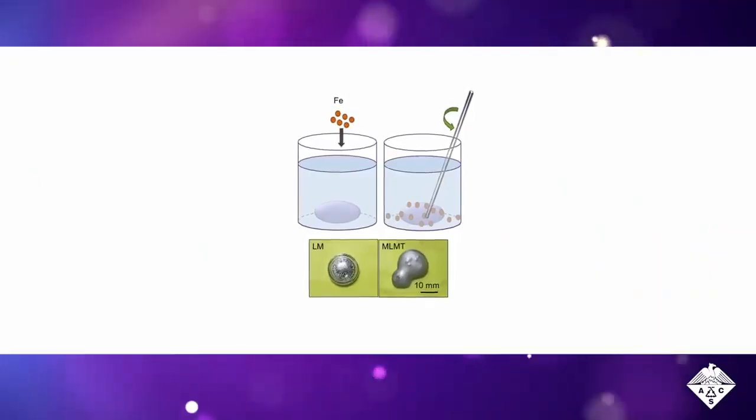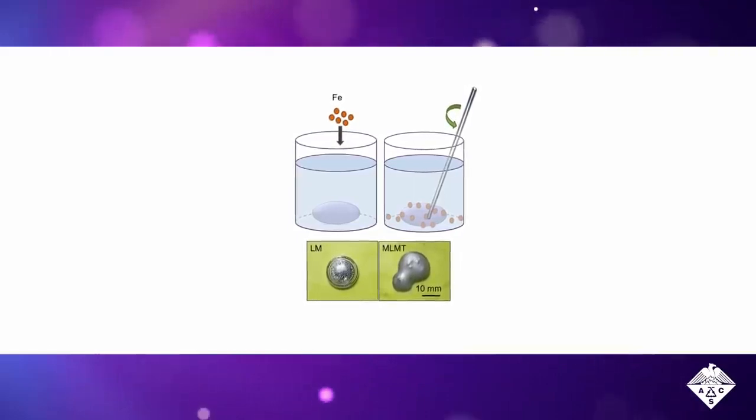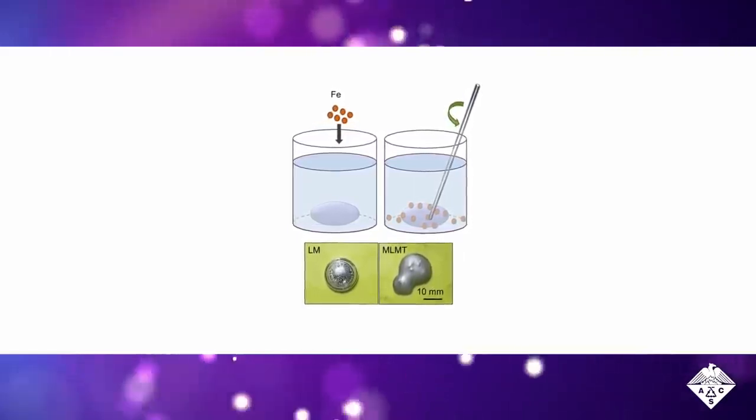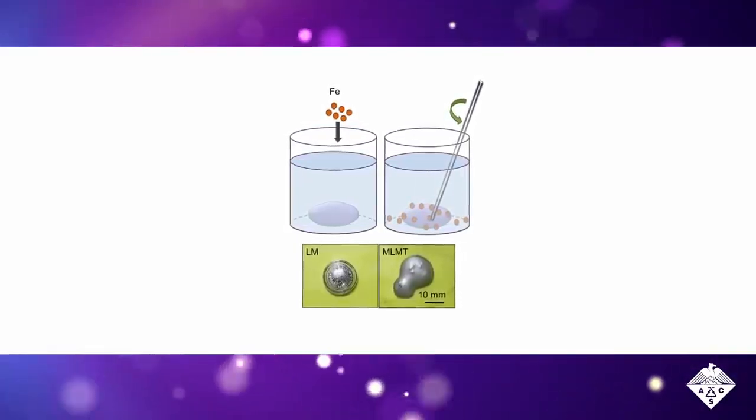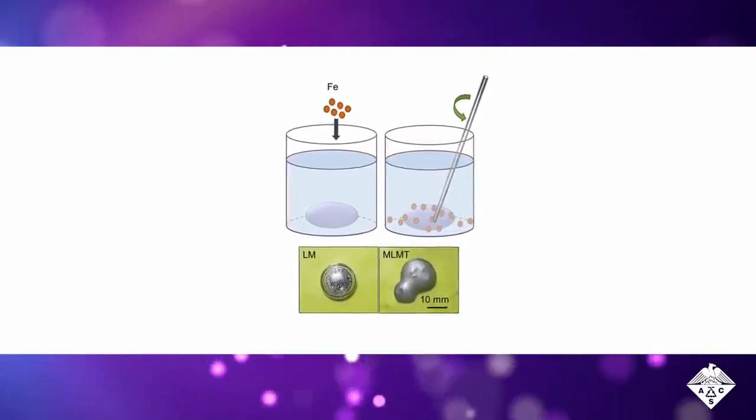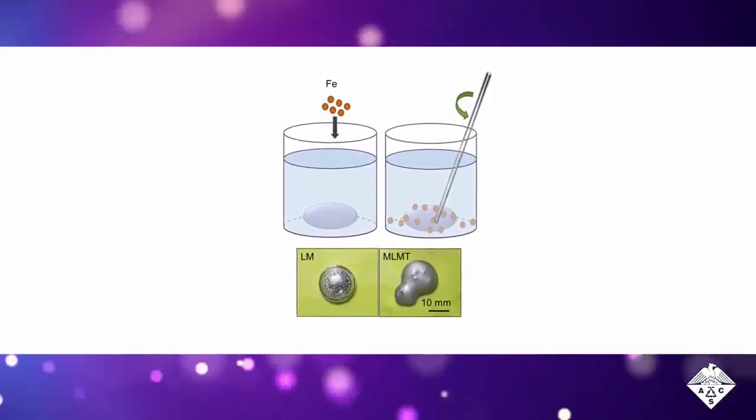By adding magnetic particles, such as nickel or iron, researchers can produce liquid metals that interact with magnets. However, most magnetic liquid metals have high surface tension and can only move horizontally.